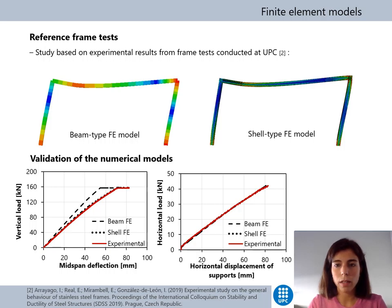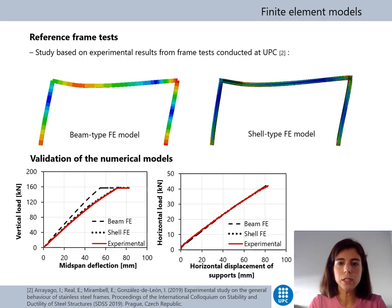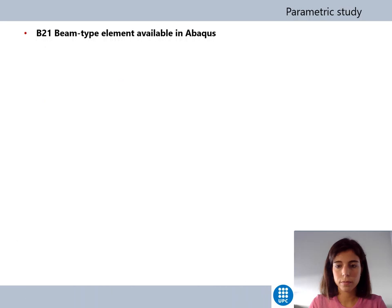The numerical models using beam-type elements and shell-type elements were validated by comparing the results obtained from a GMNIA analysis with the experimental ultimate loads, deflections, and displacements. As shown, both numerical models are capable of accurately reproducing the experimental behavior of the frame. Discrepancies between the two numerical models are related to the more accurate geometric definition of the cross-sections allowed in shell element models.